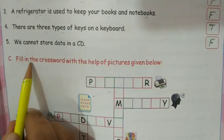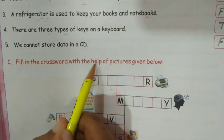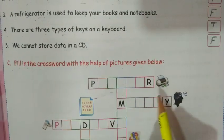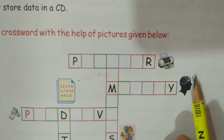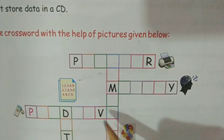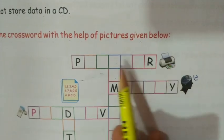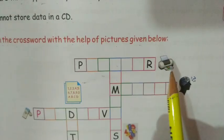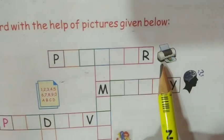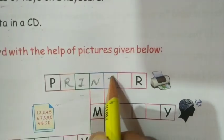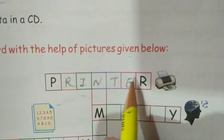The last part is to fill in the crossword with the help of the pictures given below. You can see the puzzle and the pictures. First picture is a picture of a printer — we use it to take printouts. The answer is 'printer': P-R-I-N-T-E-R.